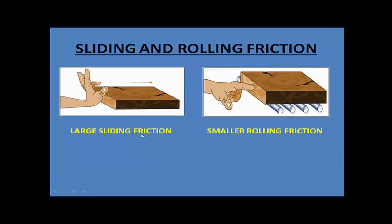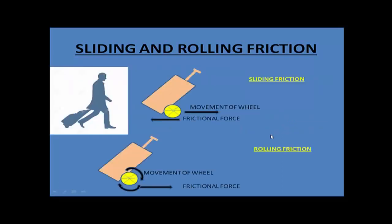So we have larger sliding friction when we directly push the plank on the ground, and smaller rolling friction when we place the same wooden plank on cylindrical objects. That is why the object moves very easily in the second case.